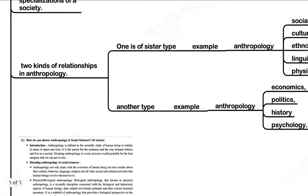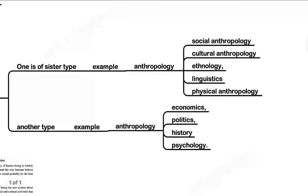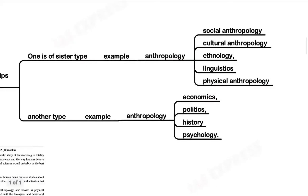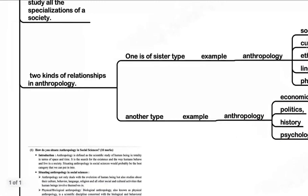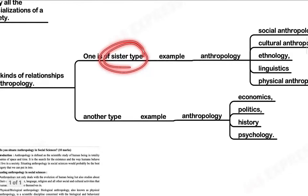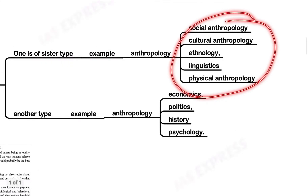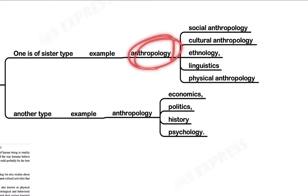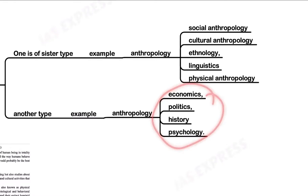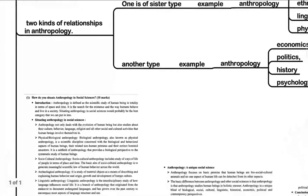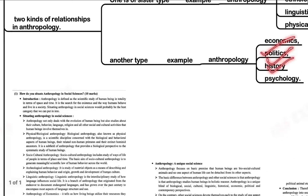There are two kinds of relationships in anthropology. One is the sister-type relationship — that is, anthropology with social anthropology, cultural anthropology, ethnology, linguistics, and physical anthropology. The other type is anthropology with economics, politics, history, and psychology, which are a little different. The subject matter of the sister-type disciplines is almost similar to anthropology — some aspects overlap while the majority are divergent.